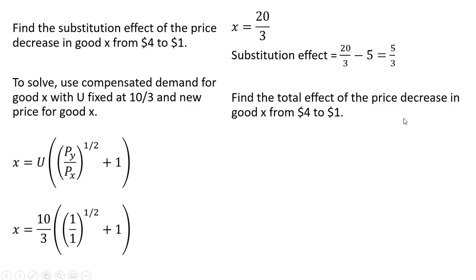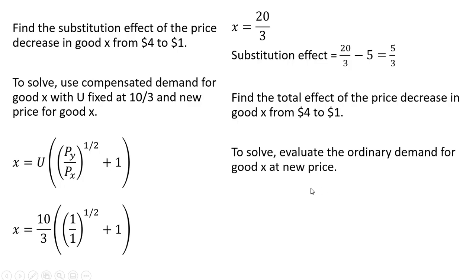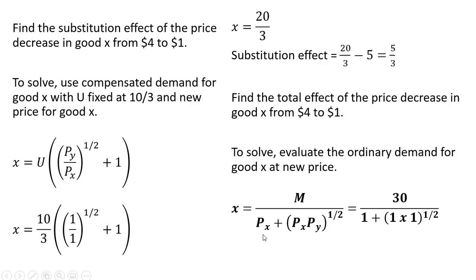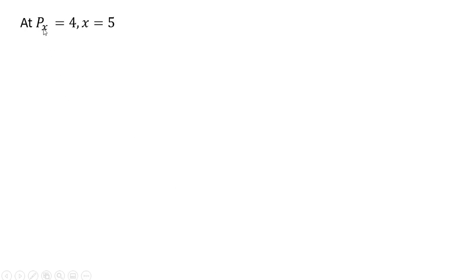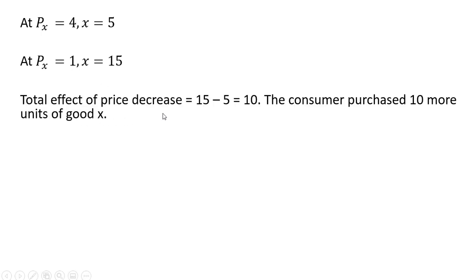Now let's find the total effect of the price decrease in good X from $4 to $1. We evaluate the ordinary demand for good X at the new lower price. Plugging in 1 for the price of good X, we get 30 divided by 2, or 15. At the original price of $4 the consumer bought 5 units; at the new price of $1 the consumer buys 15 units. The total effect is therefore 10 units — the consumer purchased 10 more units of good X following the price decrease.